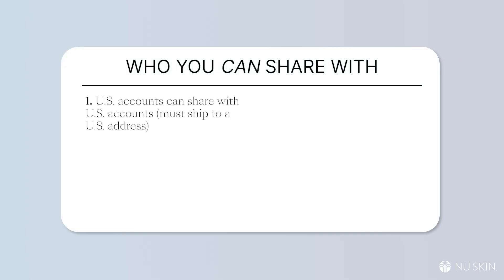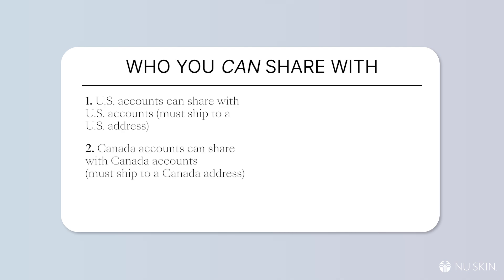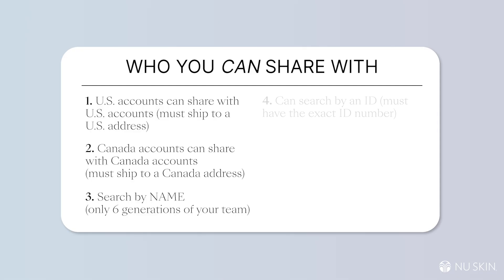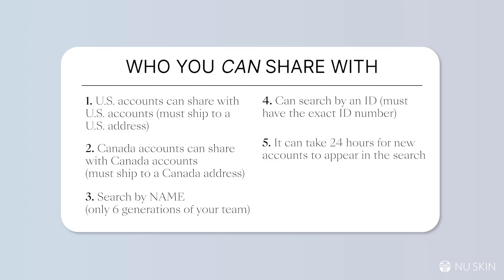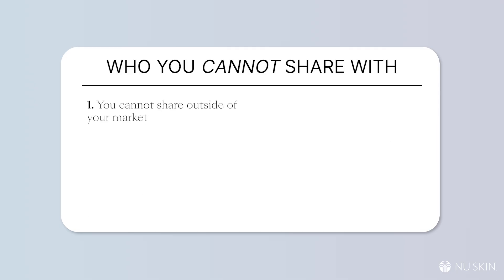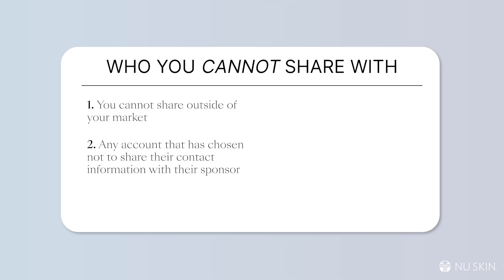US accounts can share with US accounts and it must ship to a US address. Canada accounts can share with Canada accounts but they must ship to a Canada address. When searching by name, you're only going to be able to search six generations deep in your team, but if you have the ID number you'll be able to search any account even if they're not in your organization. It can take up to 24 hours for new accounts to appear in the preview tool. You cannot share outside of your market, and any account that has chosen not to share their contact information with their sponsor is not going to show up.